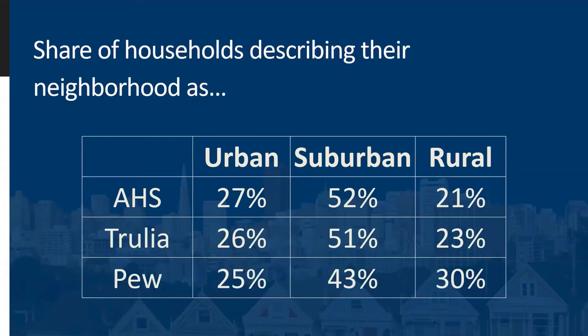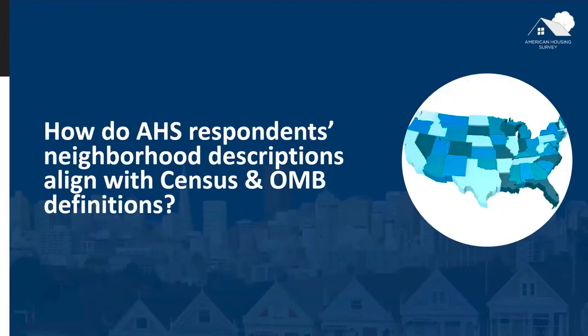Next, let's compare the AHS results to those from the Pew Research Center. In 2017, the Pew Research Center conducted a survey of 5,000 households, asking each household to describe their neighborhood as urban, suburban, or rural. The Pew survey revealed that 43% of households described their neighborhood as suburban, while 25% described their neighborhood as urban, and 30% described their neighborhood as rural. The next question we wanted to explore was how American Housing Survey respondents' descriptions of their neighborhood aligned with federal definitions of urban and rural.